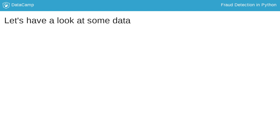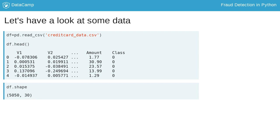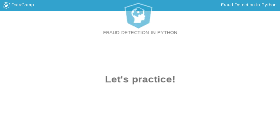In this chapter, we'll explore a dataset on credit card transactions. We have 29 features available and a class variable containing information about whether the transaction is fraudulent or not. We have data on 5,050 transactions in total, which should be enough for training our first algorithm on. Now let's have a look at this credit card data.